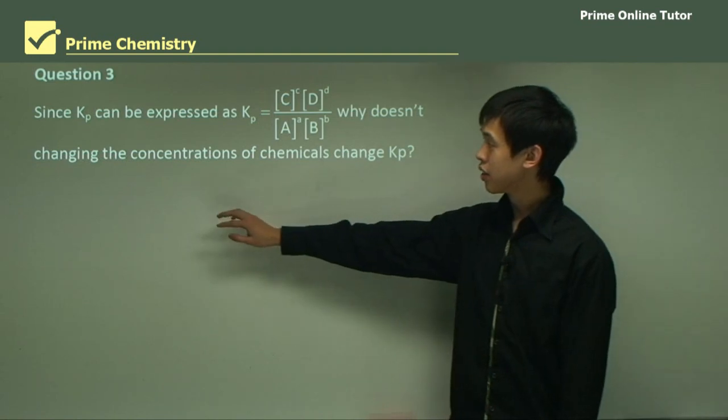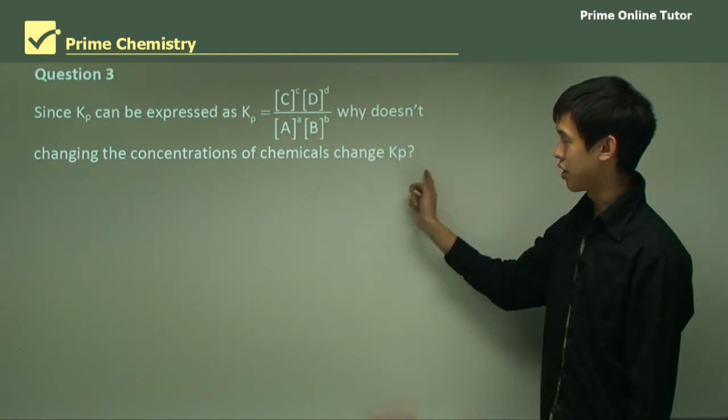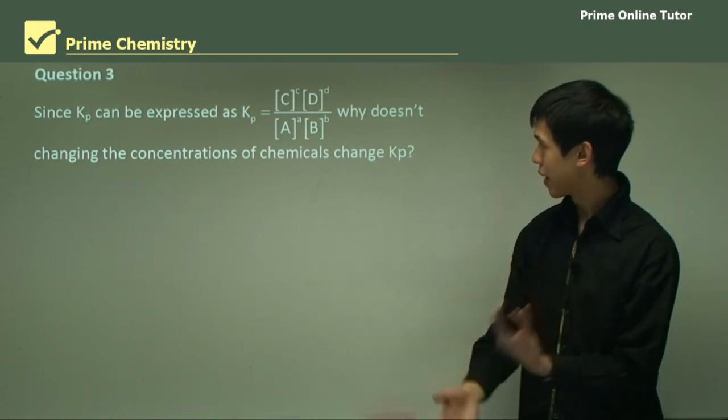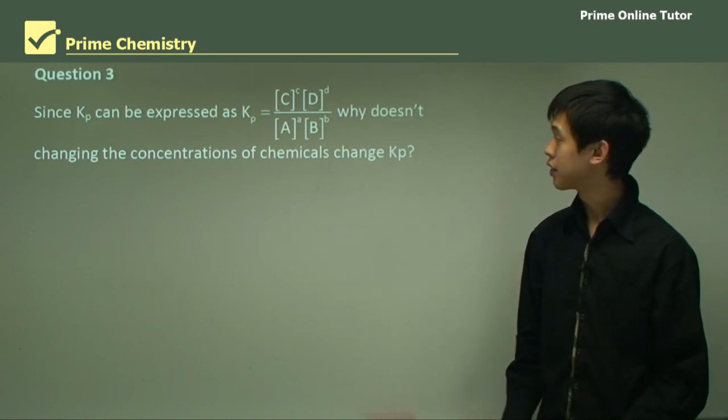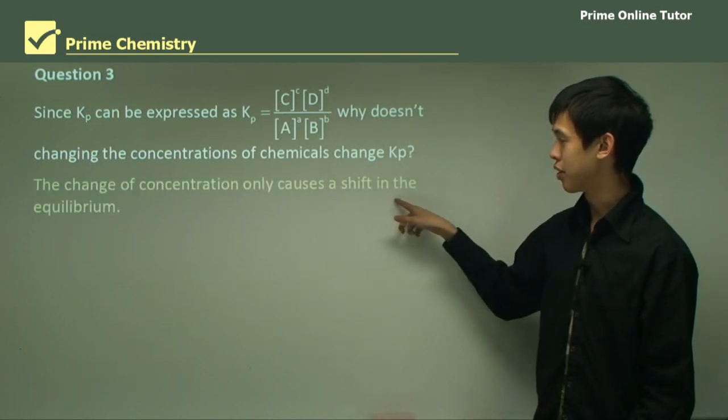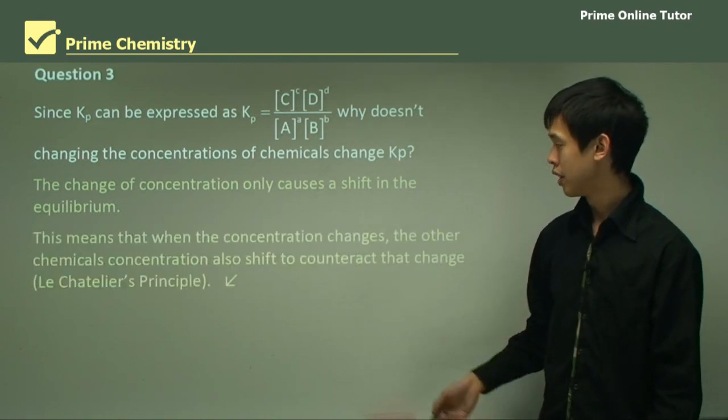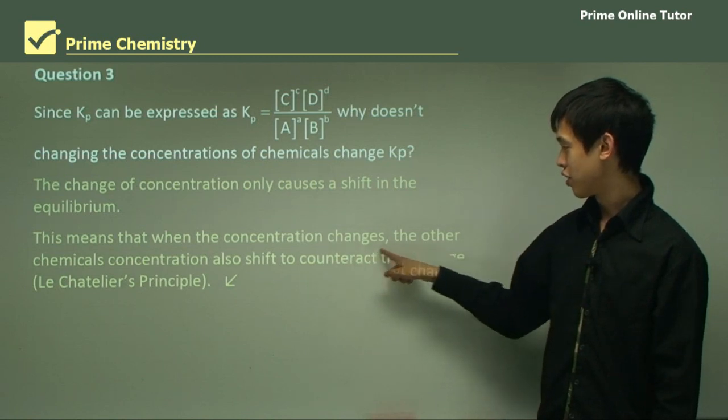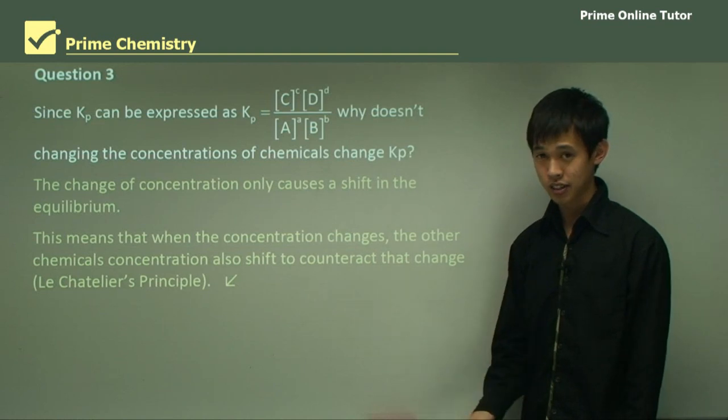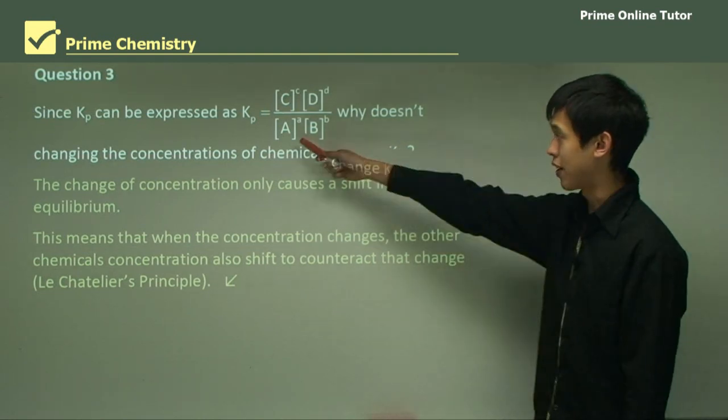So first question is, since Kp can be expressed with this equation, why doesn't changing the concentrations of chemicals change Kp? Now this is sort of a better way of showing you why it works. So the change of concentration only causes a shift in the equilibrium. We mentioned that in the first part of today's lesson. This means when the concentration changes, the other chemical concentrations also shift to counteract that change by Le Chatelier's principle. And so the chemical equilibrium, so the Kp value doesn't change.